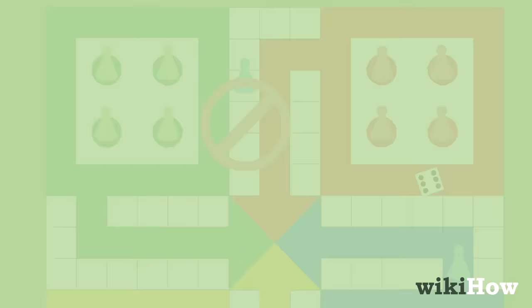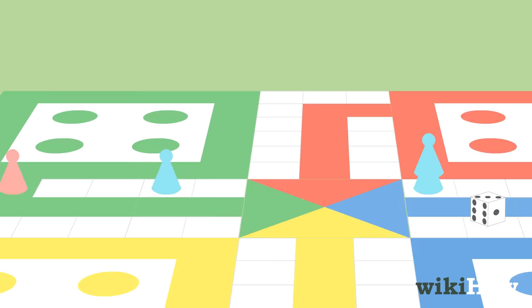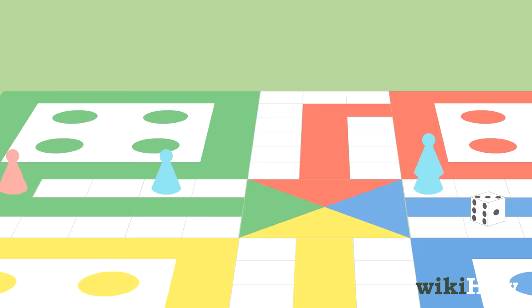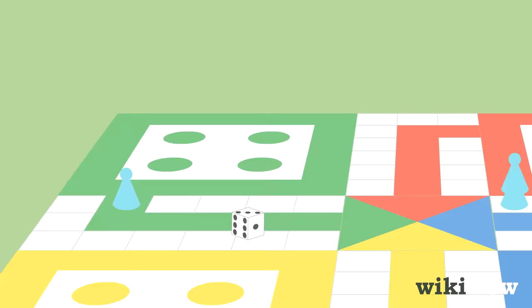A player may not land on a square they already occupy, although there are variations of the game that allow a piece to be promoted to a double piece. However, if a player lands on an opposing player's token, that opposing player's token is returned to its original starting position in the corner of the board.